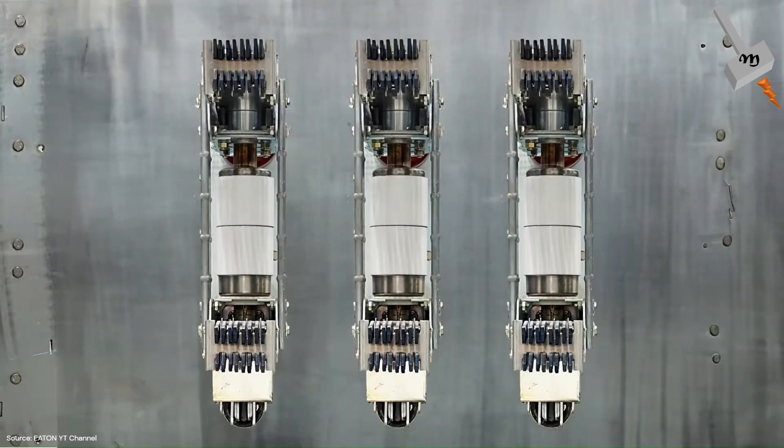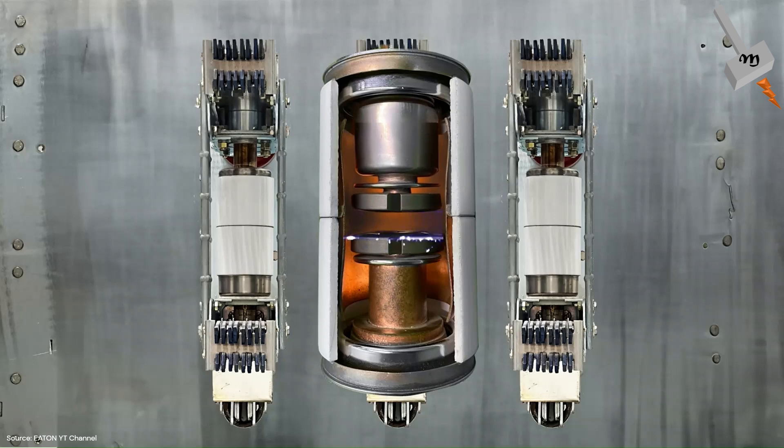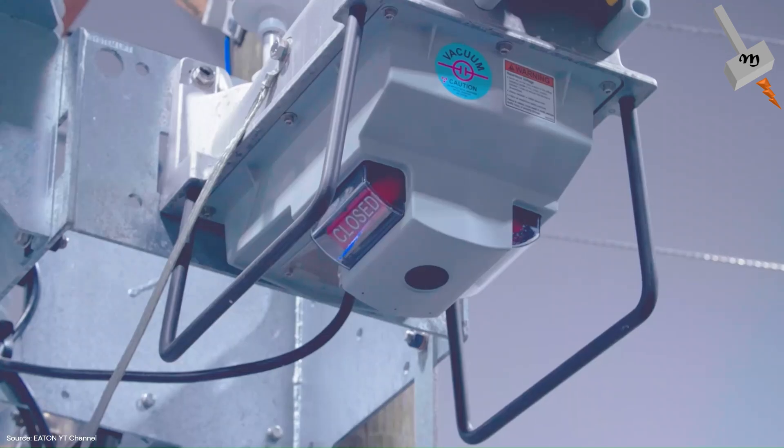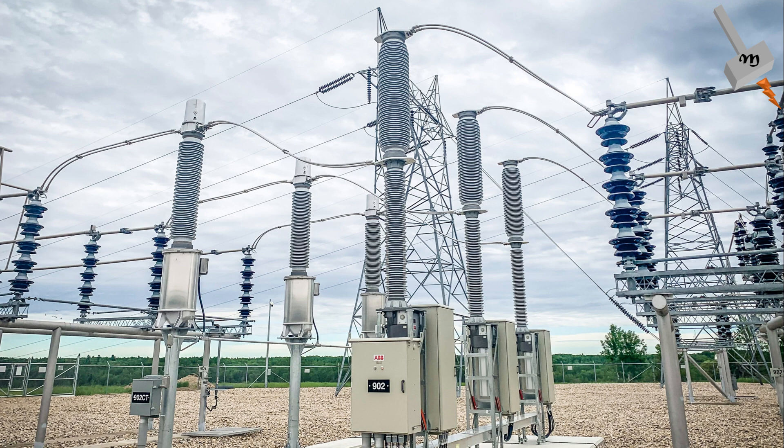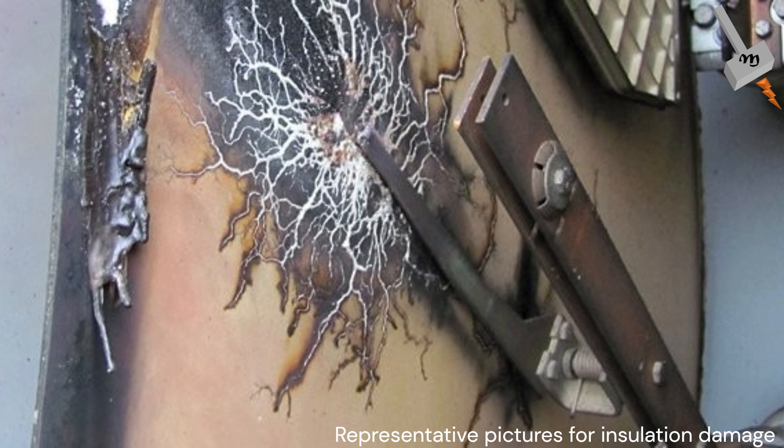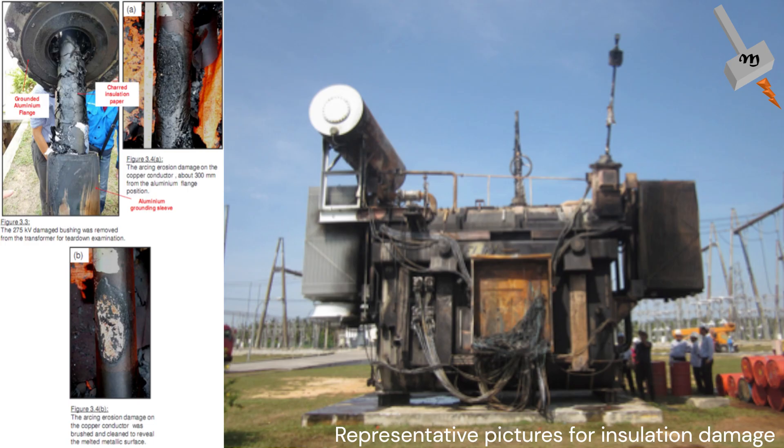Vacuum circuit breakers are like highly efficient switches within electrical systems, providing an essential layer of safety and reliability. However, in specific scenarios during their switching operations, they can introduce significant and unpredictable transient voltage surges. These surges have the potential to accelerate the aging and deterioration of insulation materials and elevate the risk of equipment failures, notably affecting critical components like transformers.